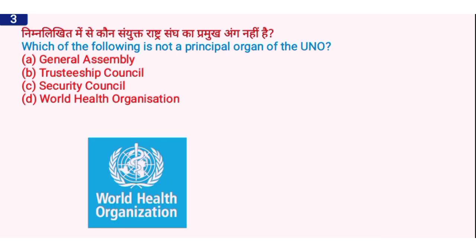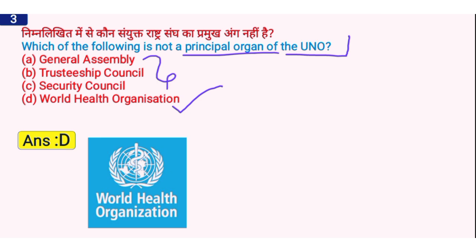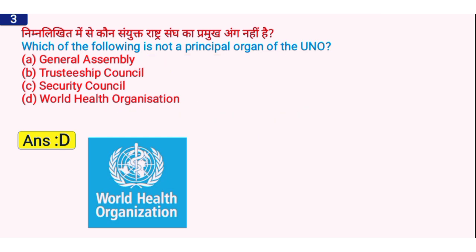Which of the following is not a principal organ of the United Nations Organization? The right answer is option D, World Health Organization. The WHO is not a principal organ of the United Nations. The General Assembly, Trusteeship Council, and Security Council are among the principal organs. The WHO's headquarters is located in Geneva, Switzerland.